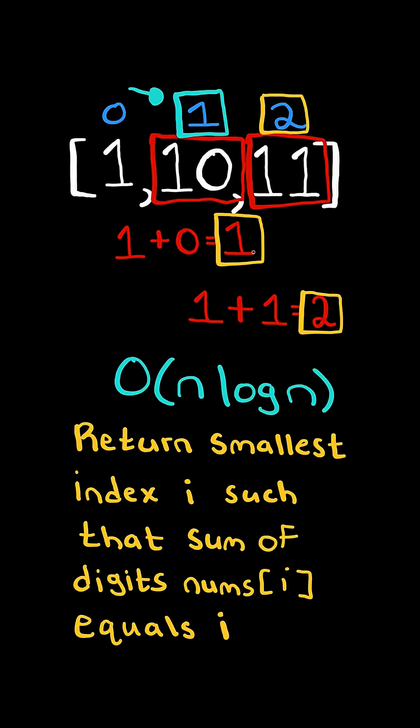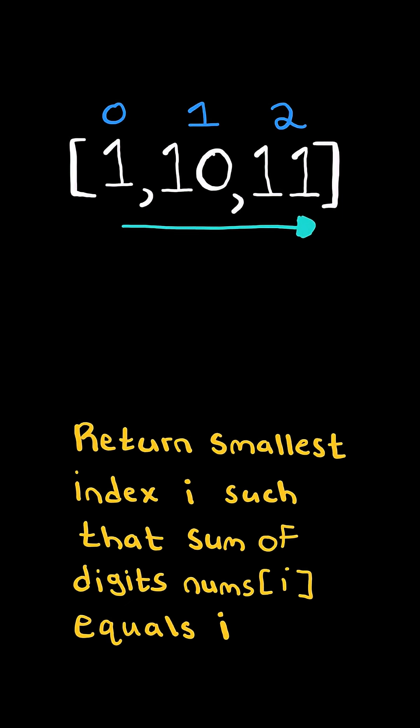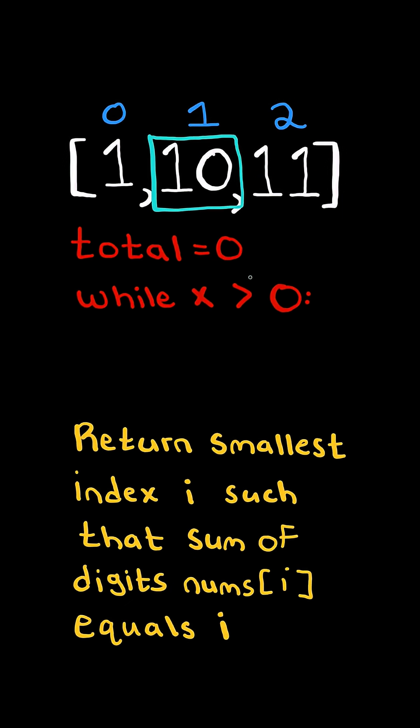We will solve this in O(n log n) time. First, we will iterate through the list, and for each number, we will initialize a total. While the number is greater than 0, we mod the number by 10. This gives us the last digit, and we add the digit to total.